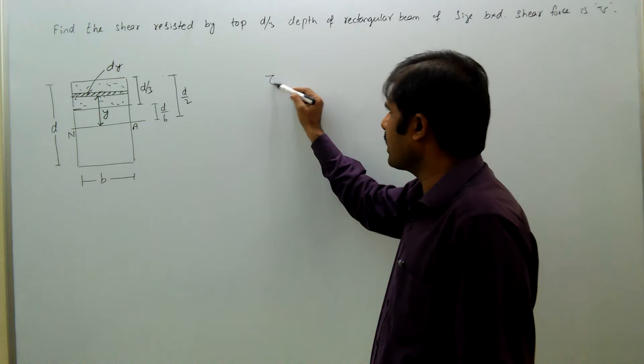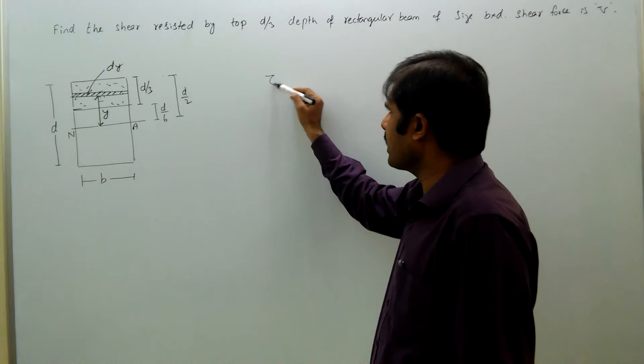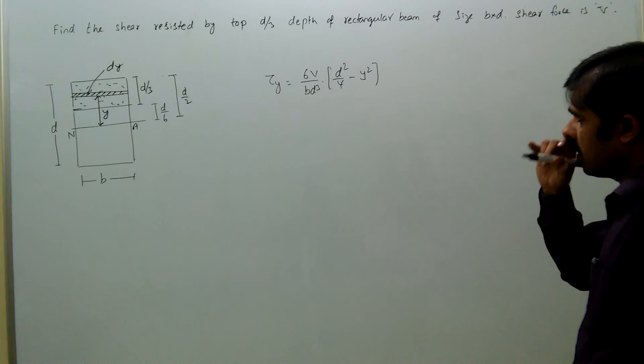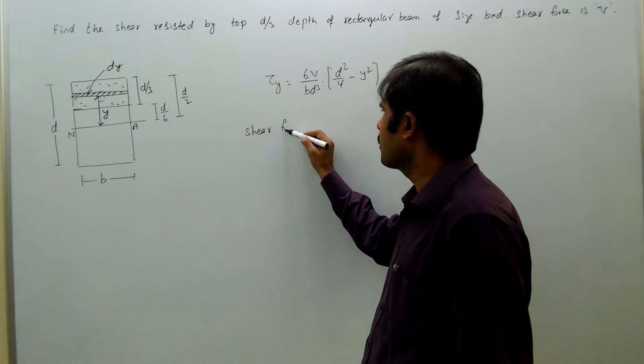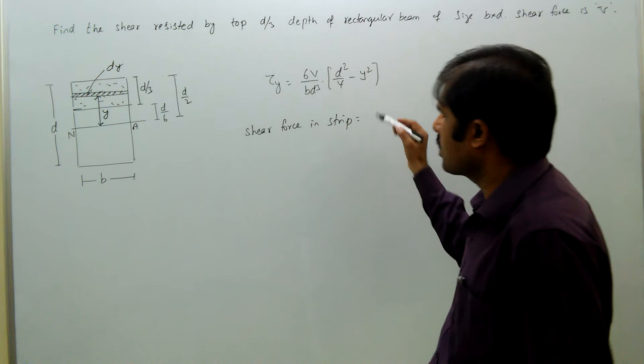What is tau at a distance of y in rectangle beam? 6v by bd cube into d square by 4 minus y square, that is tau at y. So, shear force in a strip equal to tau into b into dy.